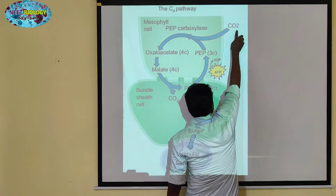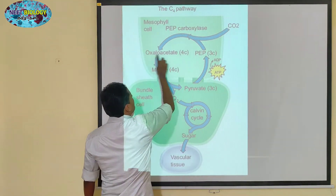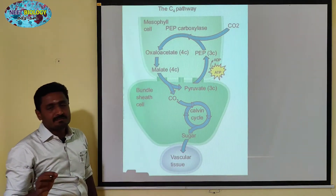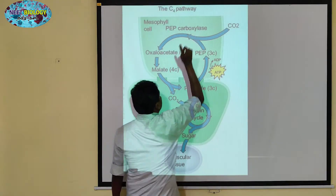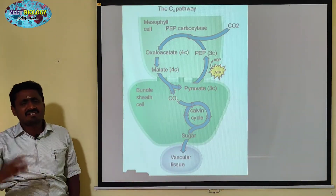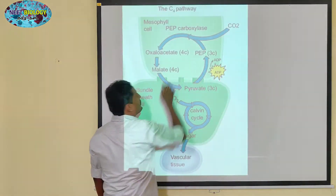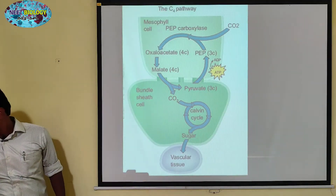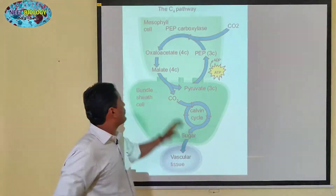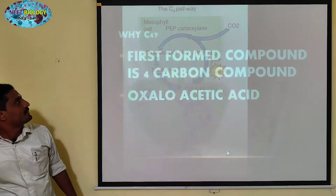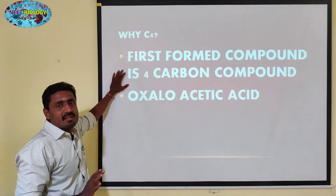Phosphoenol pyruvic acid is a 3-carbon compound. It absorbs carbon dioxide and forms a 4-carbon compound called oxaloacetic acid, with the help of an enzyme called PEP carboxylase. This is the first step, and because a 4-carbon compound is formed, it is called the C4 Cycle.